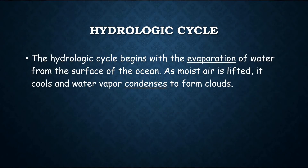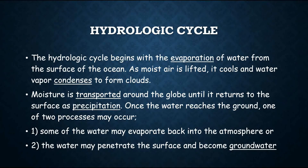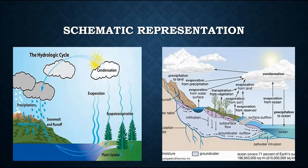The hydrologic cycle begins with the evaporation of water from the surface of the ocean. As moist air is lifted, it cools and water vapor condenses to form clouds. Moisture is transported around the globe until it returns to the surface as precipitation. Once the water reaches the ground, one of two processes may occur: first, some of the water may evaporate back into the atmosphere; second, the water may penetrate the surface and become groundwater. These are the schematic representation of the hydrological cycle.